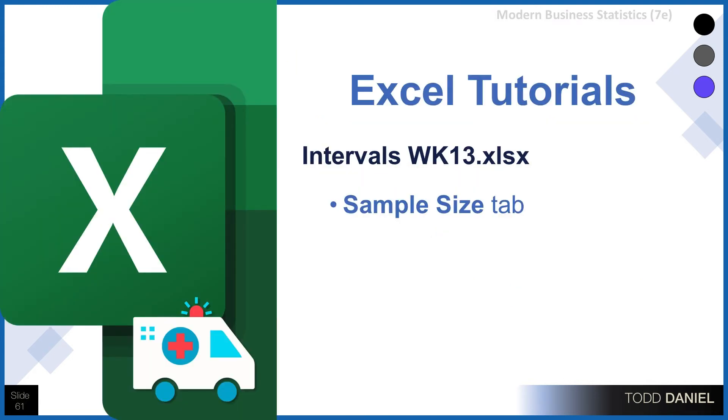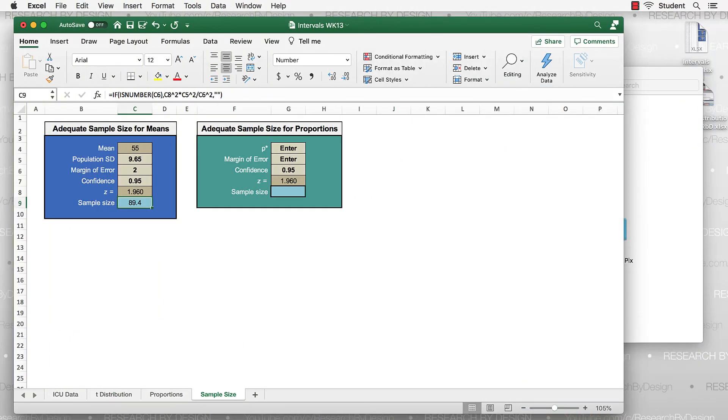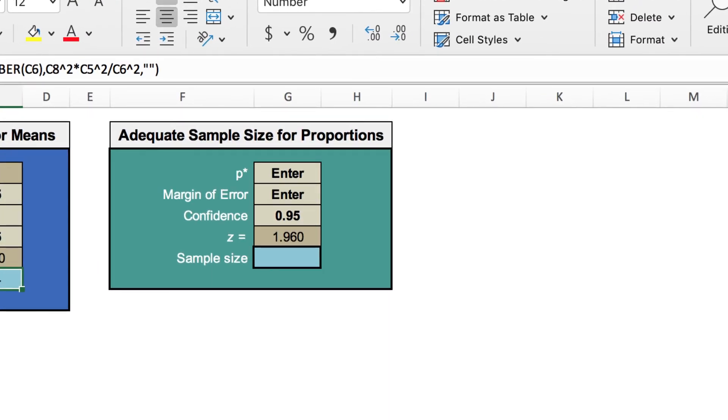So, returning to our Week 13 Excel spreadsheet, we're going to use the box to the right, the green box, and let's enter this information. Our planning value for our proportion is .44.